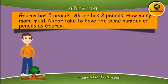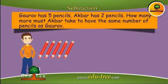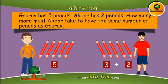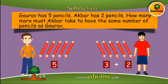Let us see how we use subtraction as complementary addition. Gaurav has five pencils and Agba has two pencils. How many more must Agba take to have the same number of pencils as Gaurav? You need to add three more pencils. We can also write it as five minus two, and you will get the answer: three pencils.